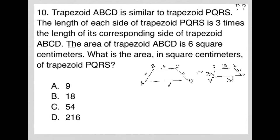The next sentence here says the area of trapezoid ABCD is six square centimeters. Okay, so area A is equal to six centimeters squared. What is the area in square centimeters of trapezoid PQRS?